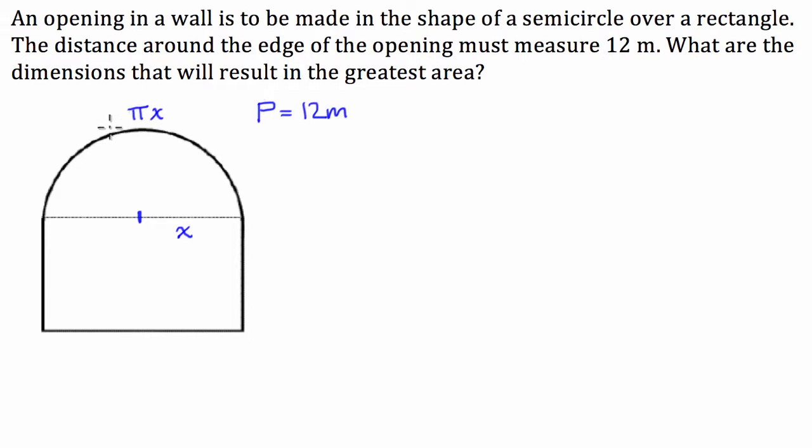Now from here, I can also work out what the base of the opening in the wall is going to be. So because the radius is x, this is going to be the diameter of the semicircle. So this is going to be 2x.